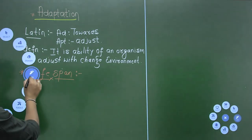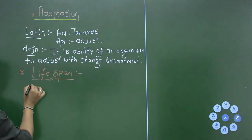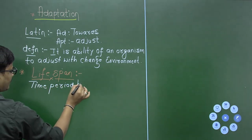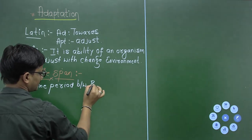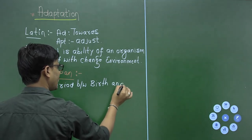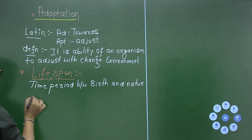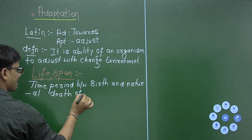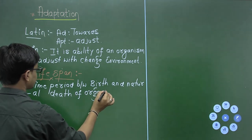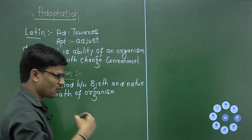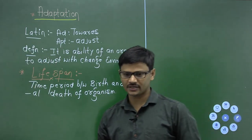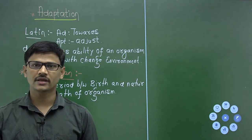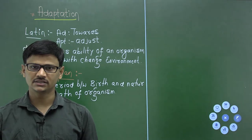Life span can be defined as the time period between birth and natural death. All organisms have their own life span, but life span varies from one organism to another. Some organisms have a life span of one or two days, whereas some others have a life span of months, years, or even hundreds of years.